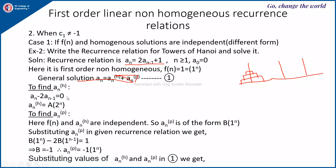The general solution is the sum of the homogeneous and particular solutions. The homogeneous solution is found by setting f(n) = 0, giving a(n) = A·2^n. For the particular solution, 2^n and 1^n are different, so they are independent. Therefore the particular solution is of the form b·1^n. Substituting into the recurrence gives b - 2b = 1, so -b = 1, meaning b = -1.